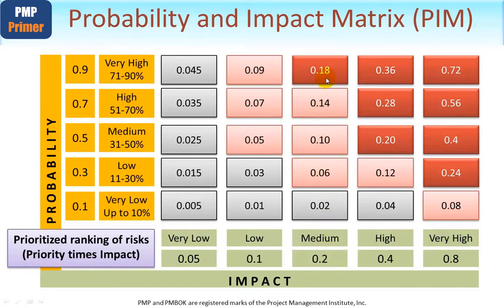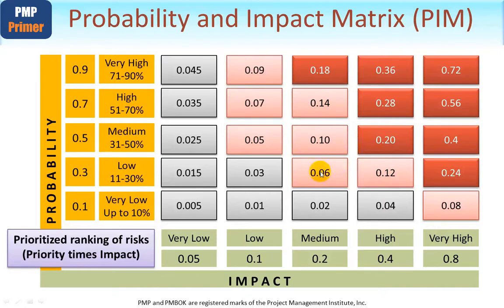By virtue of the scales chosen, we can rank all the cell values from highest to lowest. Starting at the top: 0.72, then 0.56, 0.40, 0.36, 0.28, 0.24, 0.20, 0.18, 0.14, 0.12, and so on. This gives us a ranking system to prioritize the severity of each risk, where severity is probability multiplied by impact.